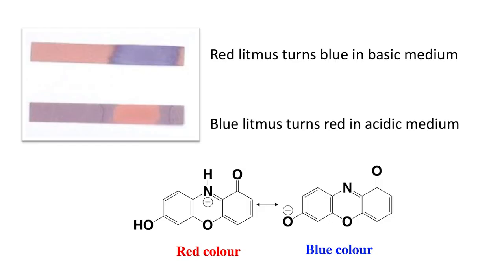There are indicators that help us detect if something is acidic or basic. You might have also studied about litmus paper — it gives you an indication whether the medium is acidic or basic. Blue litmus turns red in acidic medium, whereas red litmus turns blue in basic medium.